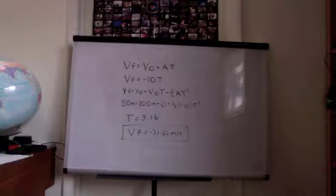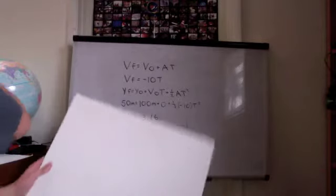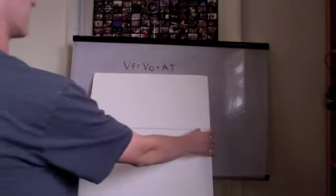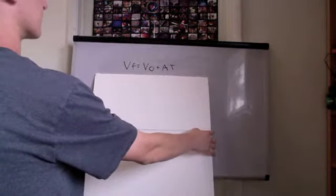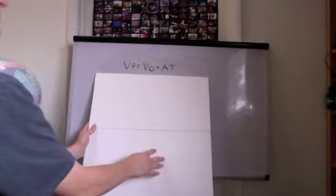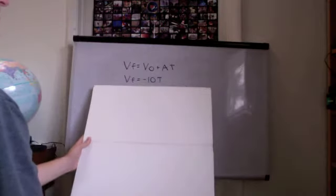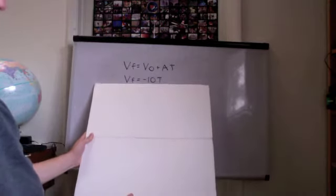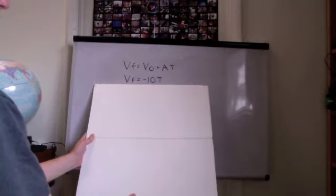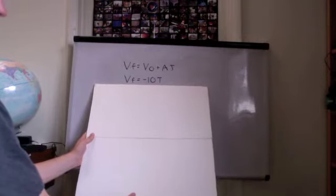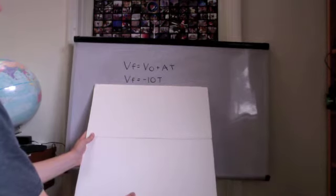To find the velocity of the elevator after falling 50 meters, we use the kinematic equation for final velocity: final velocity equals initial velocity plus acceleration times time. Our initial velocity is zero because it starts from rest, and our acceleration is the acceleration due to gravity — negative 10 meters per second squared — since the elevator is in free fall. Our two unknowns are final velocity and time.